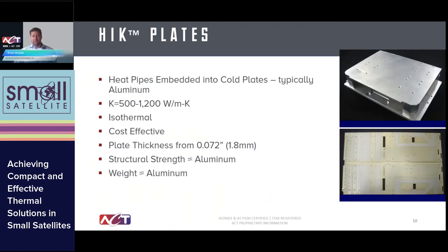One way we implement copper-water pipes, especially with small spacecraft and CubeSats, is using embedded heat pipes as part of the radiator panel. We embed copper-water heat pipes into aluminum, nickel plate the aluminum, press the pipes in, and optionally perform secondary machining for a smooth surface on both sides for mounting components. This is used not only on sidewall radiators but also as board-level spreaders. It provides really high thermal conductivity without any real structural or weight penalty — the structural strength and weight are very similar to plain aluminum without heat pipes, but you get about three to five times the thermal conductivity.